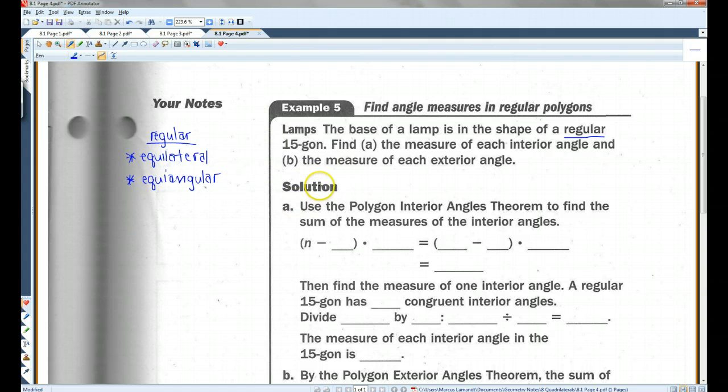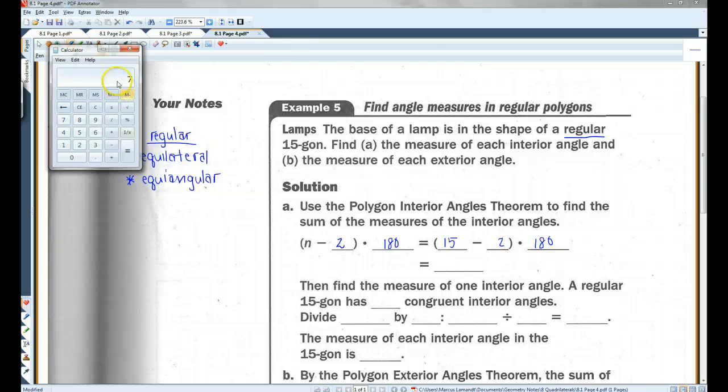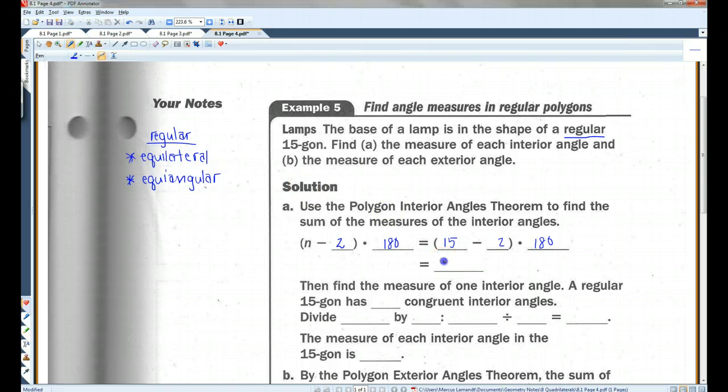Okay, so all 15 angles are congruent. Use the polygon interior angle theorem to find the sum of the measures of the interior angles. Okay, so we know our equation, n minus 2 times 180. In this case, n is 15. 15 minus 2 times 180. I'm going to use a calculator for this. 15 minus 2 is 13. 13 times 180. 2340.